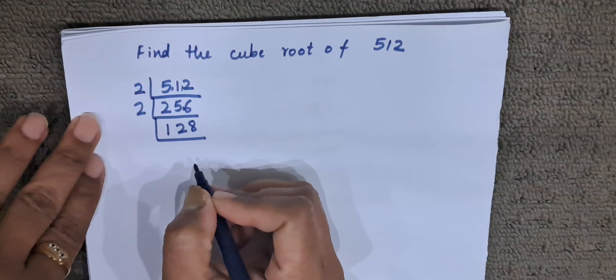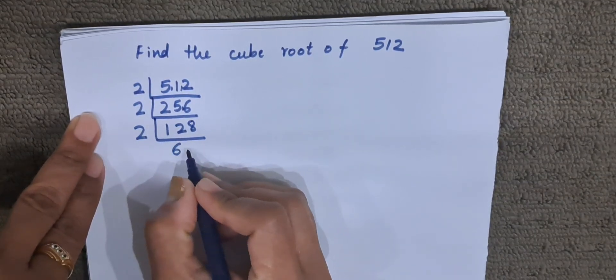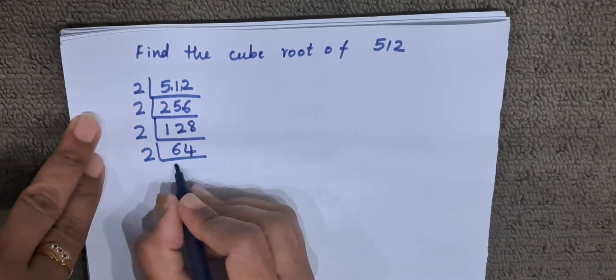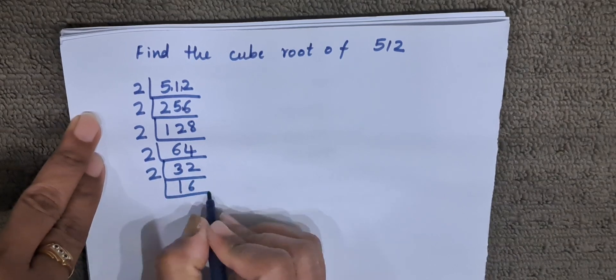Now 128 is left. Now it is again divisible by 2. 2 times 6 is 12, 2 times 4 is 8. This is again divisible by 2. 2 times 3 is 6, 2 times 2 is 4. 32, 2 times 2 is divisible by 2. 2 times 16 is 32.